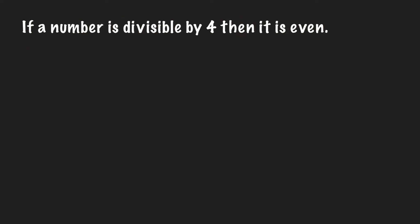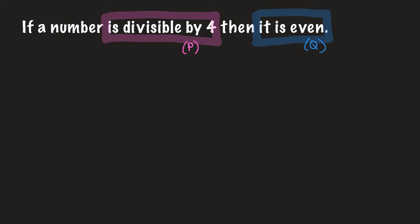Now we're looking at: if a number is divisible by four, then it is even. We're going to break it into the hypothesis and conclusion. Divisible by four is our hypothesis — our P — and 'it is even' is our conclusion — our Q. In mathematical terms: if P then Q. For the inverse, it is not P implies not Q — if not P then not Q. The order remains the same; we just negate both sides.